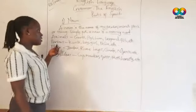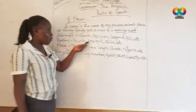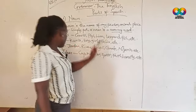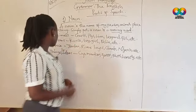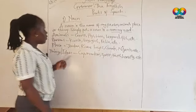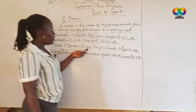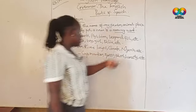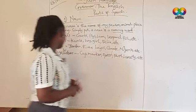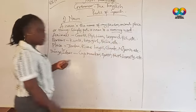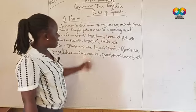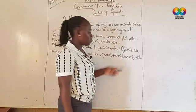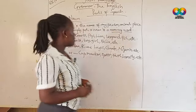For persons, we have names like Kule, boy, girl, Felix, and the likes. For places, we have Jordan, river, Lagos, Canada, Nigeria, etc. And for things or ideas, we have cup, marker, spoon, faith, honesty, etc.